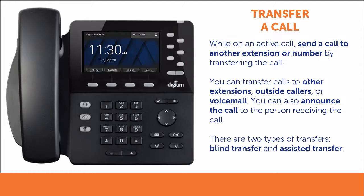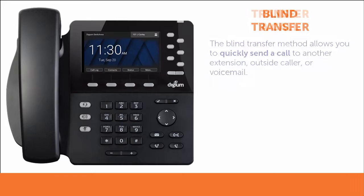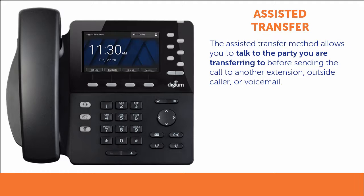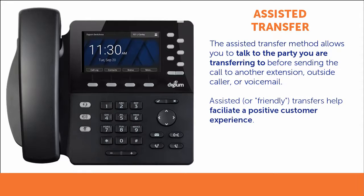There are two main types of call transfers. A blind transfer sends the caller directly to the person receiving the transfer. An assisted transfer allows you to speak with the person receiving the transfer before completing the transfer. Assisted transfers are often called friendly transfers, as this process helps to facilitate a positive customer experience during the transfer.